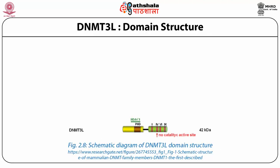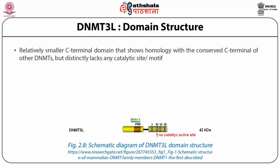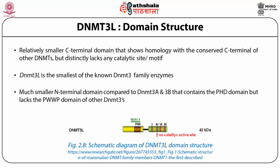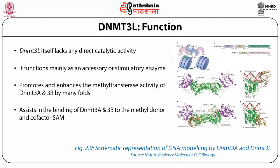DNMT3L, the third member of the DNMT3 family, is the smallest known DNMT3 enzyme. Domain structure analysis reveals that it lacks the C-terminal catalytic site and thus has no direct catalytic activity. It also has a much smaller and non-elaborate N-terminal domain compared to DNMT3A and 3B. The main function of DNMT3L is an accessory or stimulatory enzymatic role — it enhances the binding and DNA methylation activity of DNMT3A and DNMT3B.